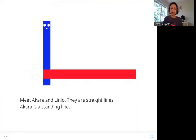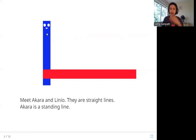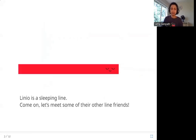Meet Akhara and Linio. They are straight lines. Akhara is a standing line — you can see it standing up straight. Linio is a sleeping line.